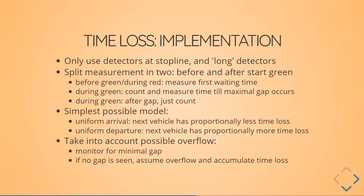For the implementation, I only use detectors at the stop line — at some point I also added looking at long detectors briefly. I split the measurement in two: the part before green and the part after start green. Before start green, during red, I measure the first waiting time. During green, I count vehicles and measure the time until a maximum gap occurs — if a gap occurs, I conclude the queue is gone, and after that I just count vehicles. To calculate time loss, I use the simplest possible model: uniform arrival, where every next vehicle has proportionally less time loss waiting before green, and uniform departure, where every next vehicle has proportionally more delay after start green. Importantly, I also take possible overflow into account — if there's no gap during a cycle, I conclude there's overflow and accumulate the time loss.